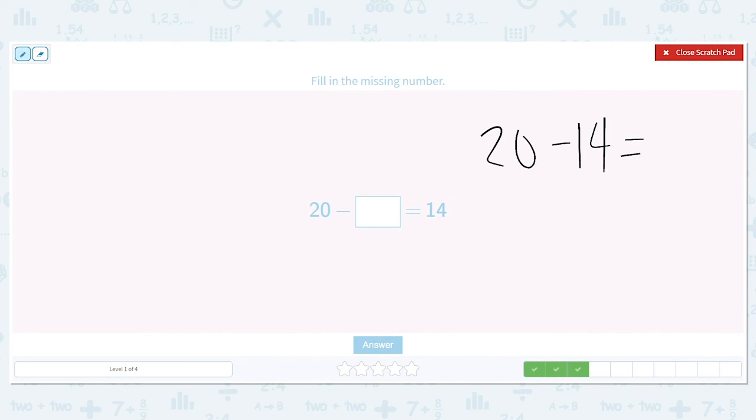Count up from 14: 15, 16, 17, 18, 19, 20. So it's 6 away. So that means 20 minus 14 is 6, and 20 minus 6 equals 14.